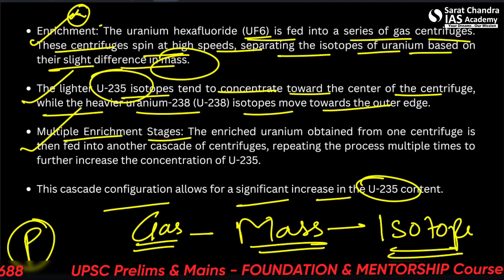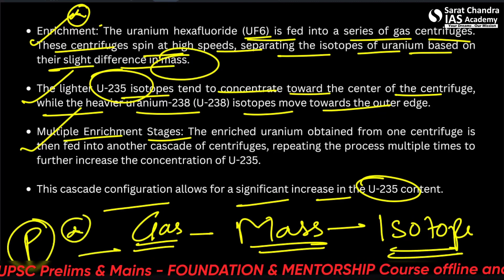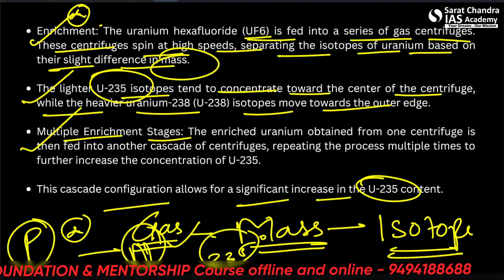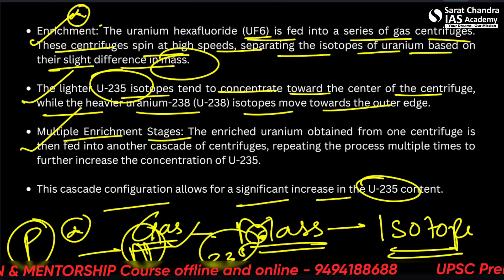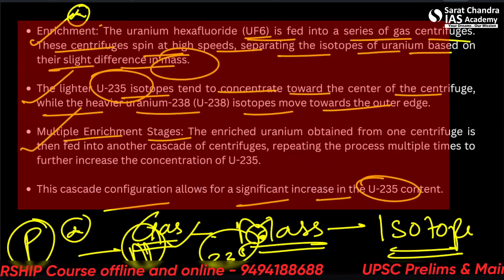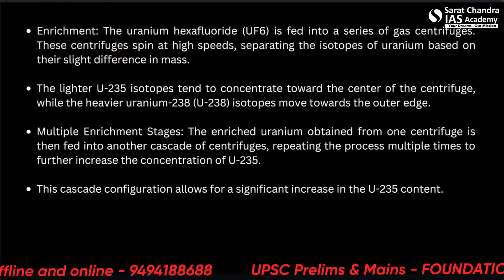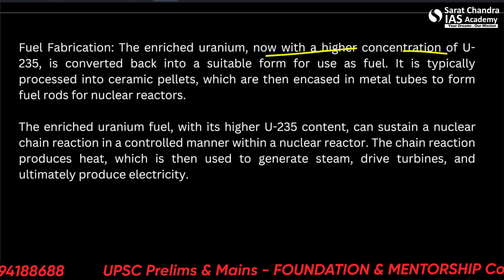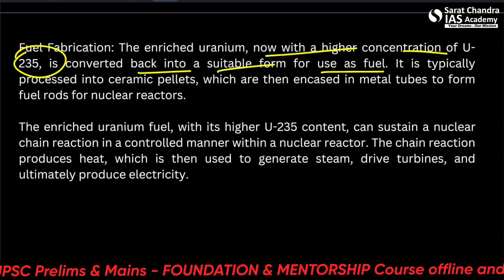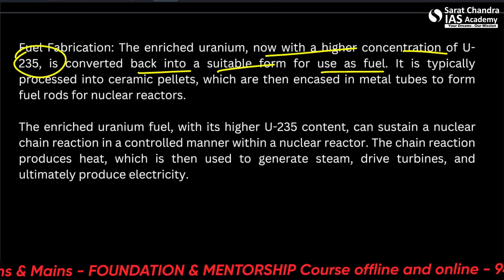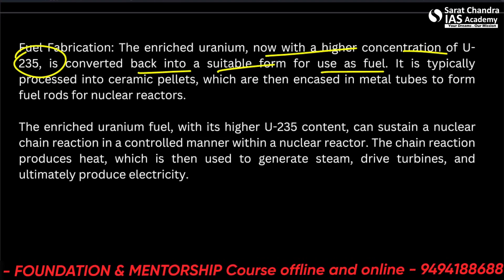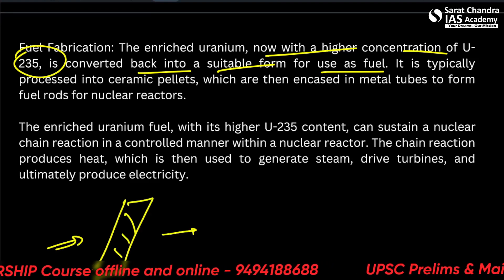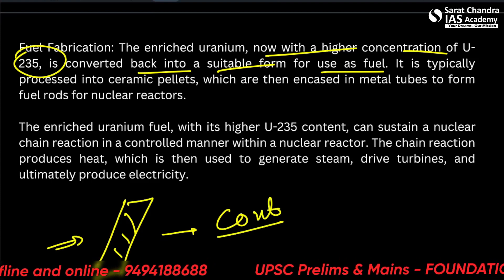Isotopes have the same number of protons — meaning they are the same element — but a different number of neutrons. We need uranium-235 for our reaction, as it can release three neutrons and break into krypton and barium. The enriched uranium is then converted into ceramic pellets, which form the fuel rods, encased in metal casing.